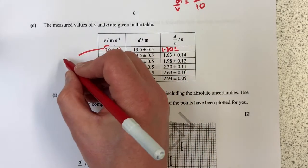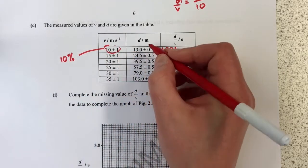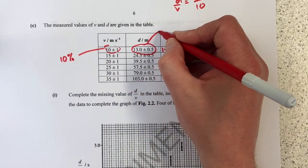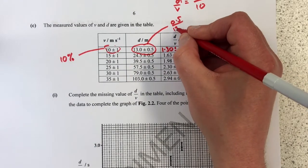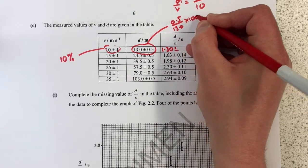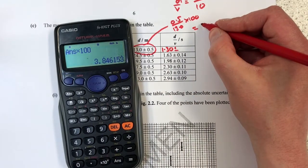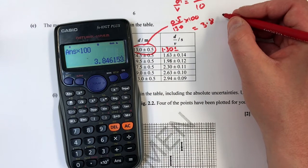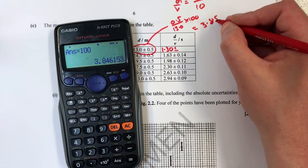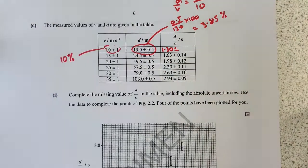This one's easy, this one's just 10% uncertainty, one in 10. Do the same for this one, a little bit of calculation required here. So it's going to be 0.5 divided by 13.0 times by 100, that gives me uncertainty of 3.85%. I'll just leave it as 3.85% uncertainty there.